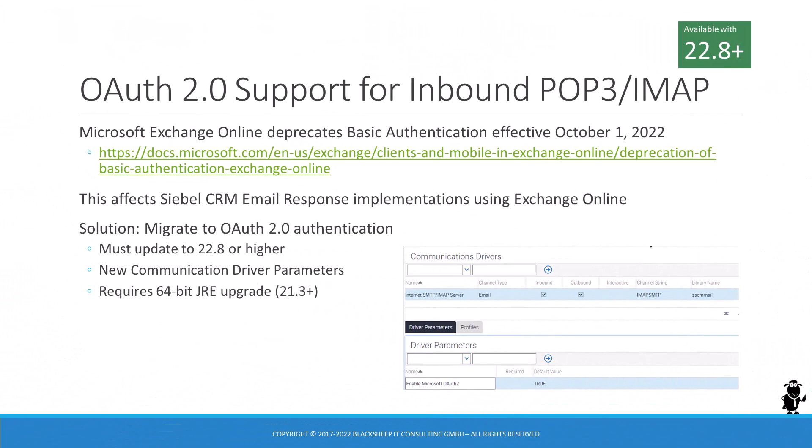Administrators in Siebel CRM implementations that use email integration with Microsoft Exchange Online are probably squirming in their seats as the deprecation date for Basic Authentication approaches fast. Effective October 1, 2022, Microsoft will begin disabling Basic Authentication for protocols such as POP and IMAP. If your Siebel CRM implementation includes communication drivers that connect to Microsoft Exchange Online, update or upgrade — if you're on IP 16 or older — to 22.8 or later before October 1, as it is mandatory.